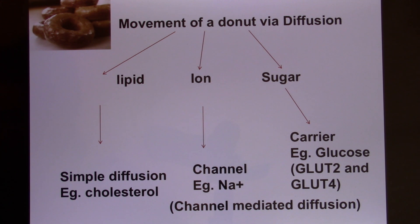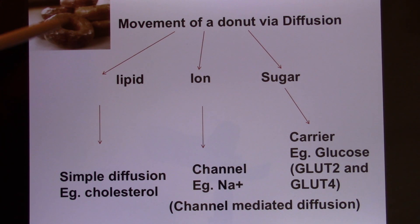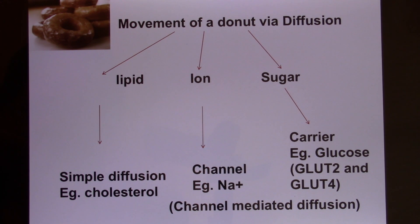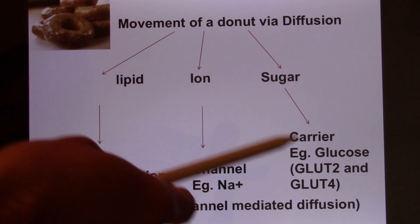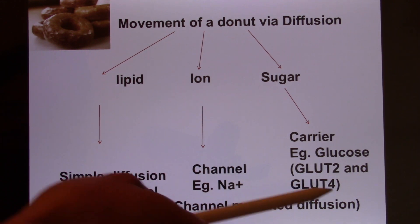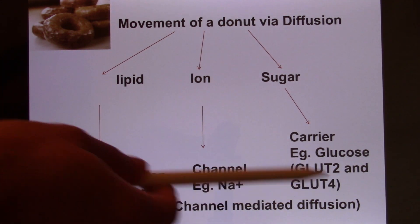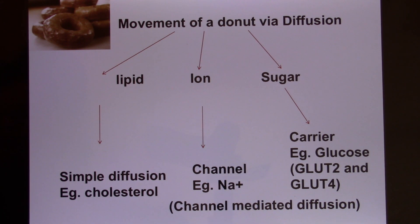For sugars: carbohydrates are the energy source, and your digestive system cuts them into simple sugars. Glucose is still too big to use simple diffusion through the cell membrane, so you need glucose carriers. We have two famous glucose carriers: GLUT2 and GLUT4. GLUT4 is insulin sensitive.